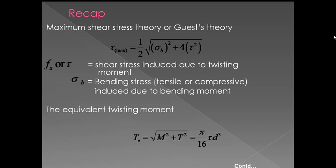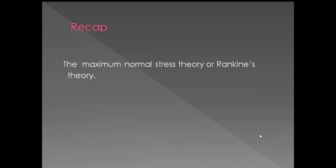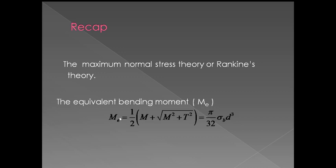For Guest's theory, we first find the equivalent twisting moment: T_e equals the square root of (M squared plus T squared), which equals pi by 16 into tau into d cubed. For Rankine's theory — the maximum normal stress theory, used for brittle materials — the equivalent bending moment M_e equals half into (M plus the square root of M squared plus T squared), which equals pi by 32 into sigma_b into d cubed.